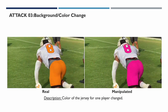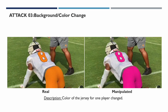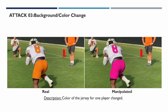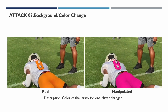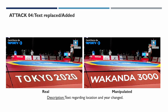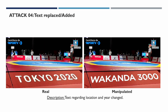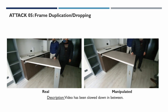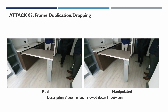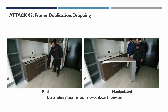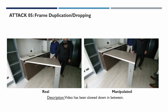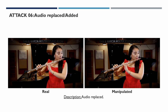The third attack entails altering the background or foreground color. In this example, we have changed the color of the jersey of one of the players. In the fourth attack, we replace or add some text. For instance, we have altered the text regarding the location and year of the games. Attack 5 is a temporal attack where we duplicate, drop, or add additional frames — in this example, we have added duplicate frames to slow the video down. In the last temporal attack, we play with the audio component.